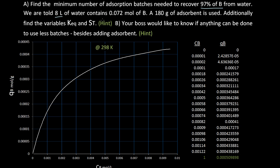We are told that we have 8 liters of water that contains 0.072 moles of B. We are also told that we have 180 grams of adsorbent, and we need to find the variables KEQ and ST. Part B asks whether anything can be done to use fewer batches besides adding adsorbent.